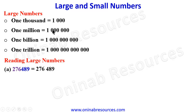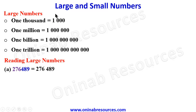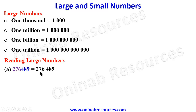When you read it, it reads as two hundred and seventy-six thousand four hundred and eighty-nine. Looking at the place values: ones, thousands, ten thousands, hundred thousands — so it falls in the thousands category: two hundred and seventy-six thousand four hundred and eighty-nine.